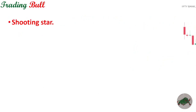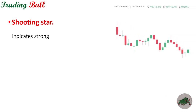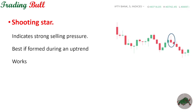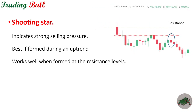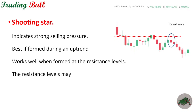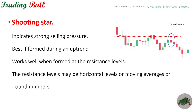Next is the shooting star. A shooting star indicates strong selling pressure. It is best formed at resistance levels, which may be horizontal levels, moving averages, or round numbers — for example, 40,000 or 50,000 in Nifty Bank.